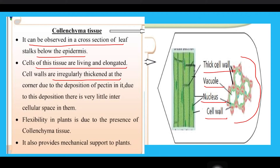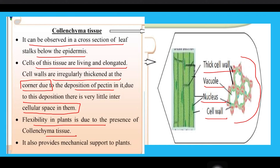The cells are irregularly thickened at the corners — you have to remember this. They are irregularly thickened at the corners due to the deposition of pectin, and there is very little intercellular space between the cells. Flexibility in plants is due to the presence of colenchyma tissue, and it also provides mechanical support to the plants.